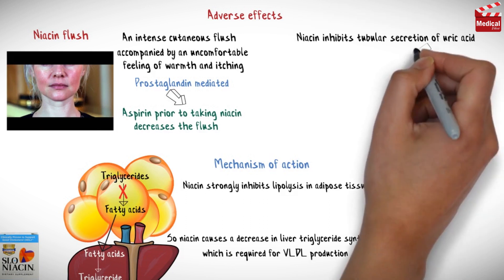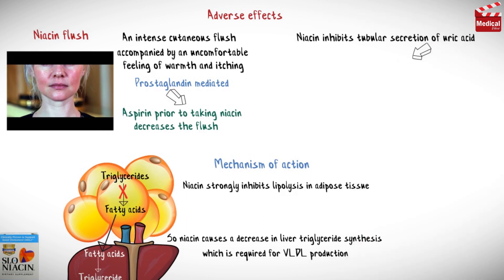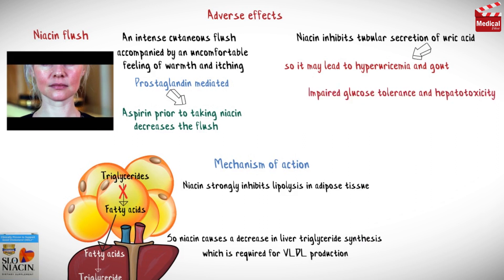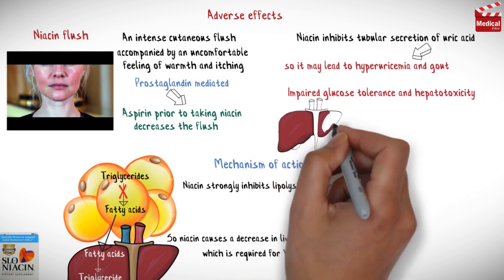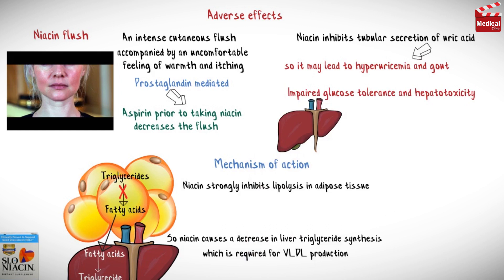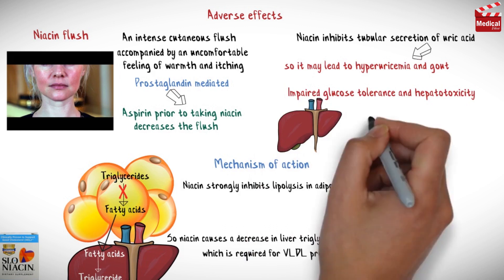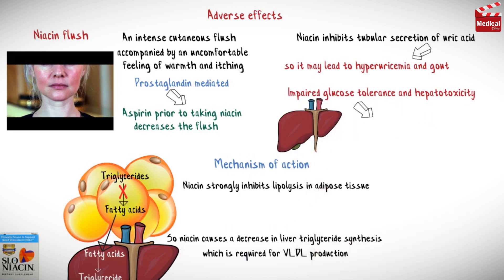Niacin inhibits tubular secretion of uric acid, so it may lead to hyperuricemia and gout. Impaired glucose tolerance and hepatotoxicity have also been reported, so niacin should be avoided in hepatic impairment.